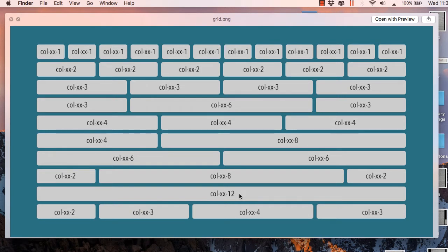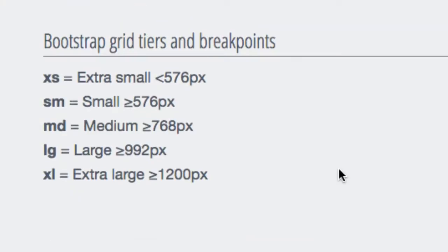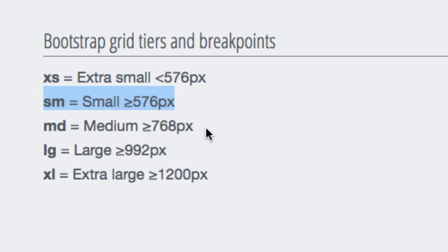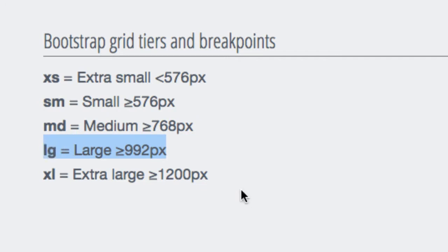Now let's look at what the device-size abbreviations stand for. There are five screen sizes: extra small (xs) for less than 576px, small (sm) for greater than 576px, medium (md) for greater than 768px, large (lg) for greater than 992px, and extra large (xl) for greater than 1200px. I'll show you a practical example so you can understand this better.